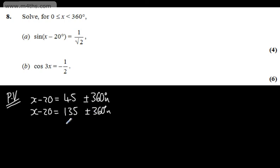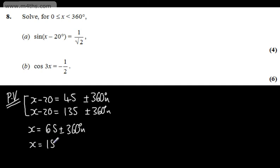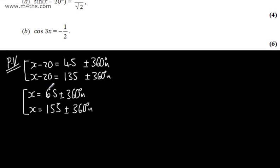Now we go ahead and solve by adding 20 to both sides. So x will be equal to 65 plus or minus multiples of 360 degrees, and x will also equal 155 plus or minus multiples of 360 degrees. We can see the only value satisfying the interval from the first equation is x = 65 degrees.